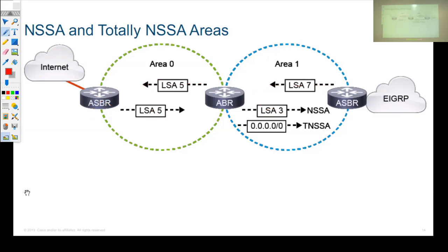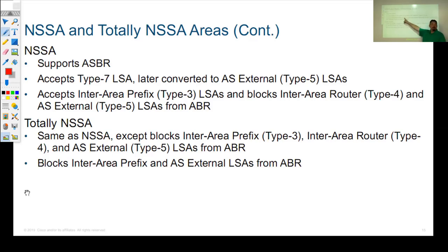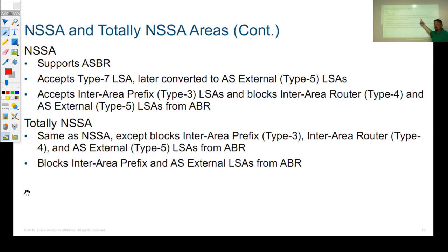Information is hidden by advertising that default route into the not-so-stubby or totally not-so-stubby area. NSSAs support an ASBR — they accept type 7 LSAs advertised from the ASBR, which are later converted into a regular type 5 LSA at the ABR, looking like a regular external route to every other area. NSSAs still accept type 3 and type 4 LSAs but block type 5 LSAs. Note that in newer versions of IOS code (15.0+), type 4 LSAs are also blocked in NSSAs — if you're not getting type 5 LSAs for external networks, there's no reason to know the router ID of the ASBR either; just use the default route.